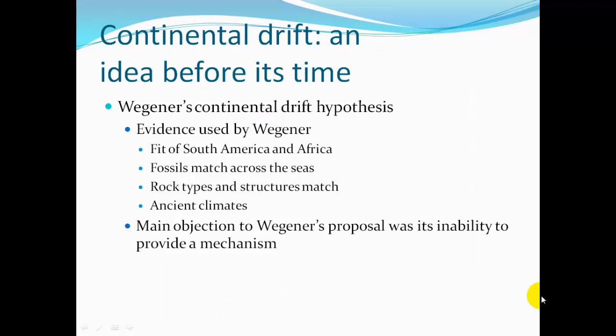The evidence Wegener used included the fit of South America and Africa together, like puzzle pieces. He also noted fossils that matched across the seas — when you fit the continents together, the same fossils line up on each continent. Rock types and structures also matched, such as mountain chains, and there was alignment of ancient climates.